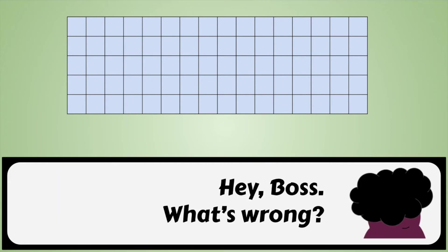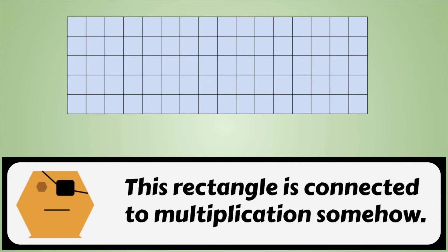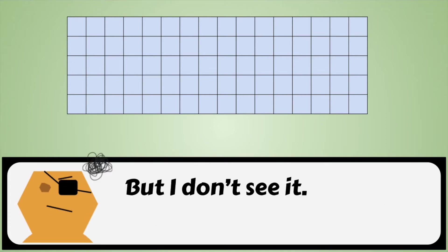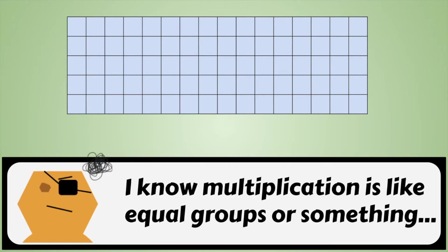Hey, boss. What's wrong? This rectangle is connected to multiplication somehow, but I don't see it. I know multiplication is like equal groups or something.